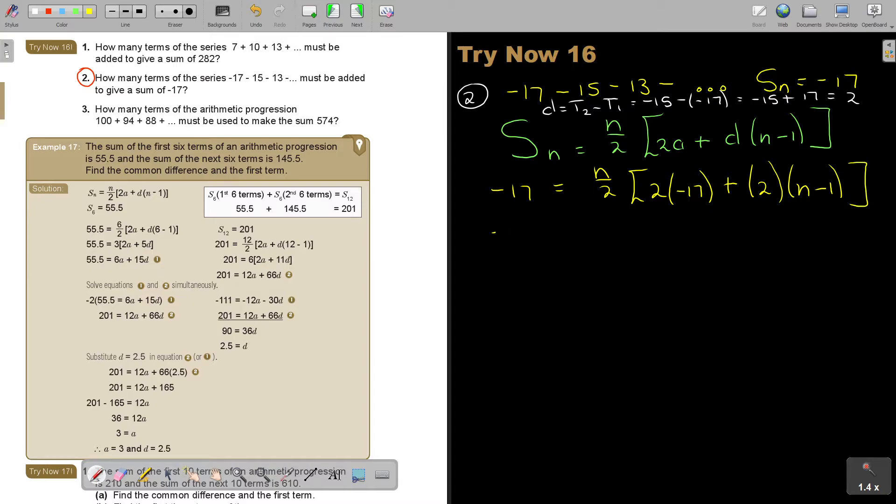If I simplify negative 17, I will now get it out. So this is negative 34, this is 2N minus 2. Now, this is actually one term, so it's over 1. So if I cross multiply, I just take this 2 and multiply it on the other side.